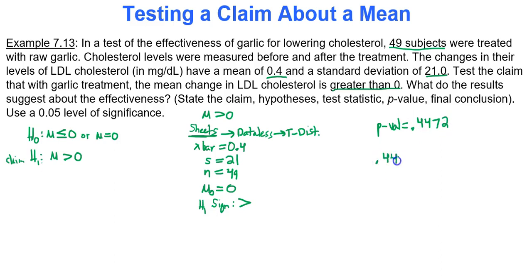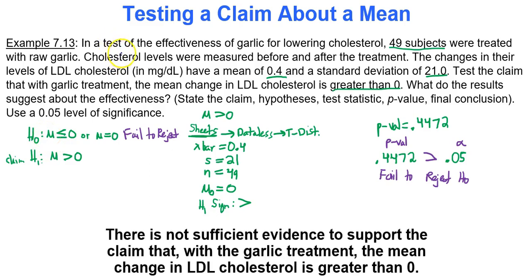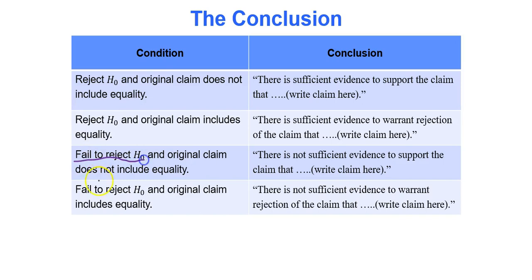We compare the p-value of 0.4472 to the significance level of 0.05. The p-value is definitely bigger, so since we're not under the limbo bar, we fail to reject the null hypothesis. We can't say anything about our alternative — our claim — so there's not sufficient evidence to support it. The conclusion is: there is not sufficient evidence to support the claim that with the garlic treatment the mean change in LDL cholesterol is greater than zero.